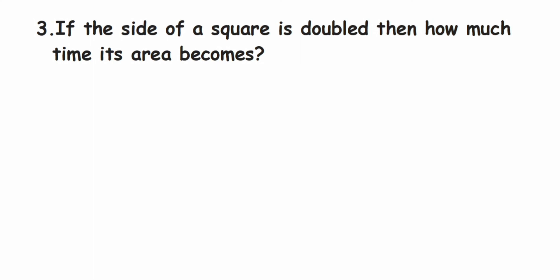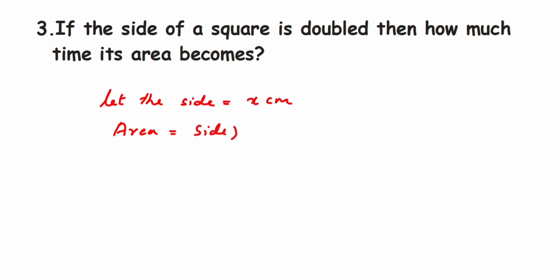Third question: if the side of a square is doubled, how many times does its area become? No value is given, so let us assume the side equals x centimeters. Then the area equals side squared, which is x squared centimeters. So with side x, we get area = x² centimeters squared.